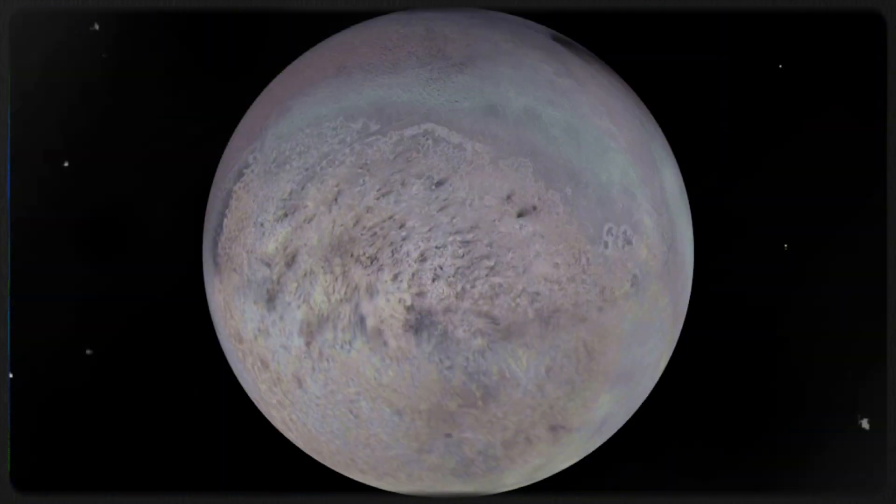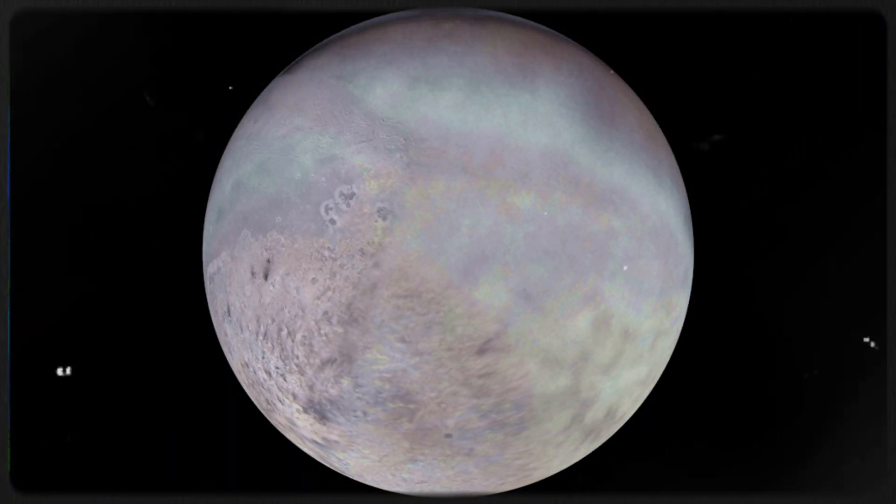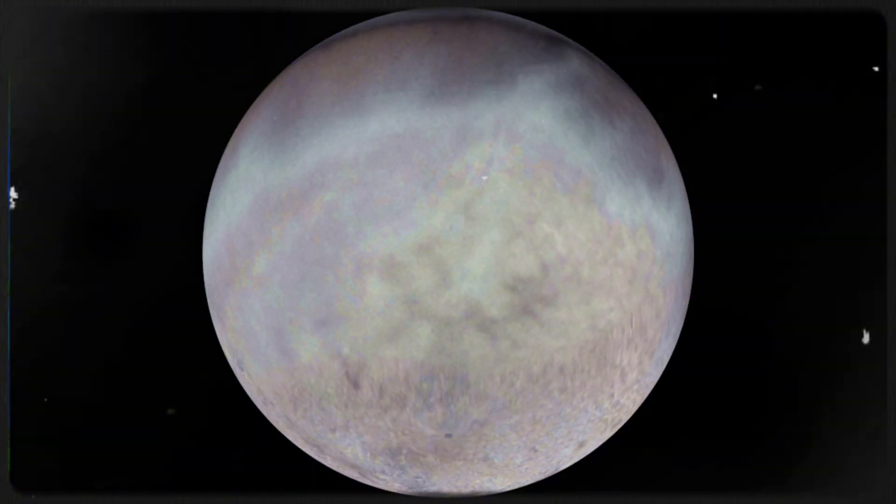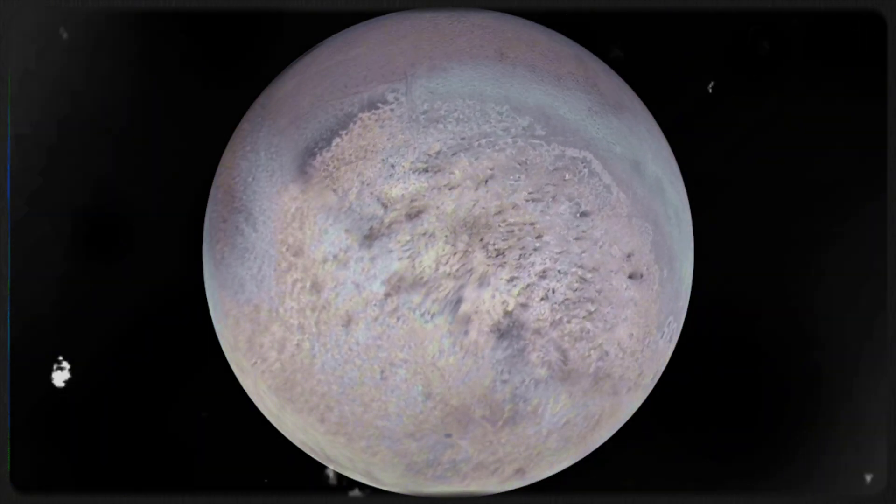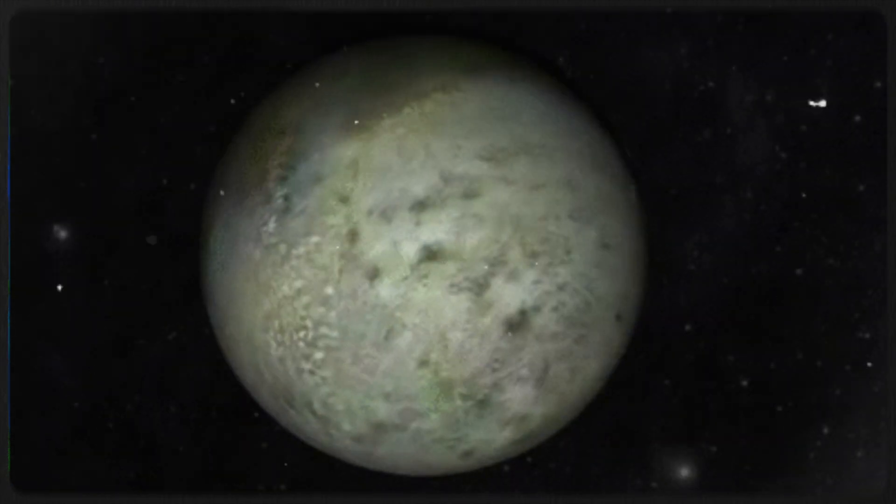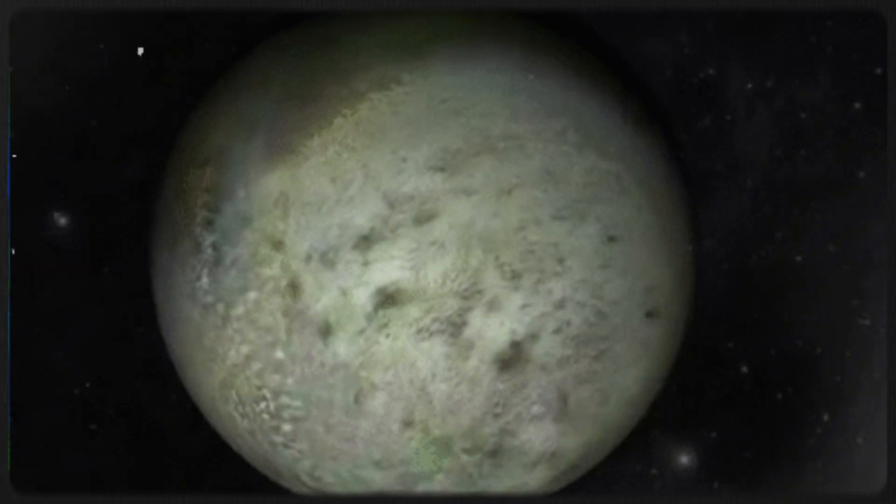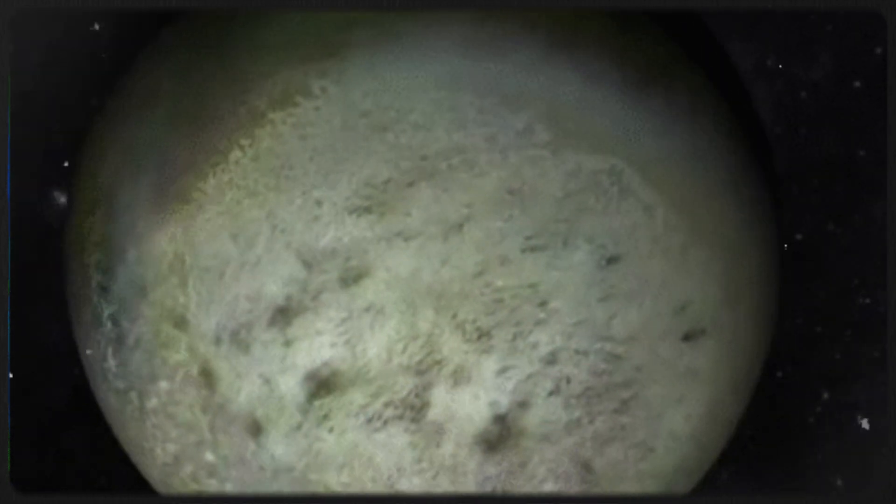Voyager 2 also found Triton, Neptune's largest moon, to be one of the coldest places in the solar system, with surface temperatures around negative 391 degrees Fahrenheit or negative 235 degrees Celsius. Ice volcanoes on Triton were seen ejecting nitrogen gas and dust particles five miles into the moon's thin atmosphere.